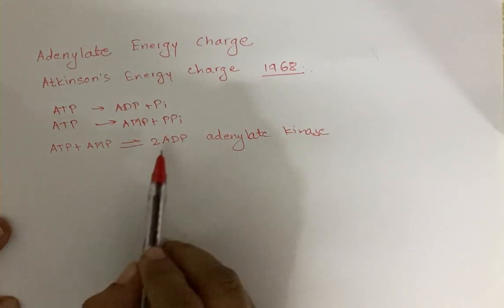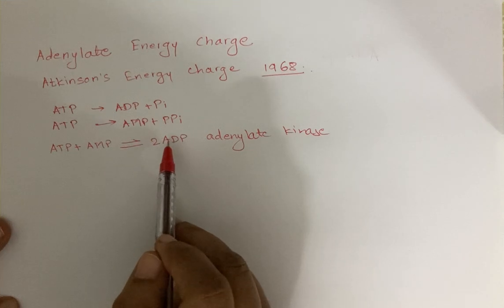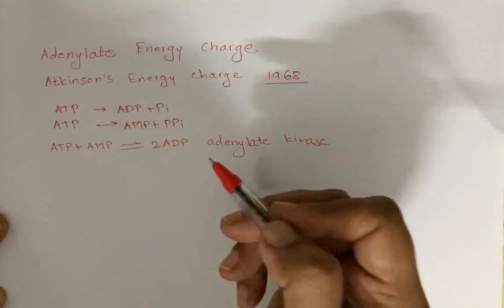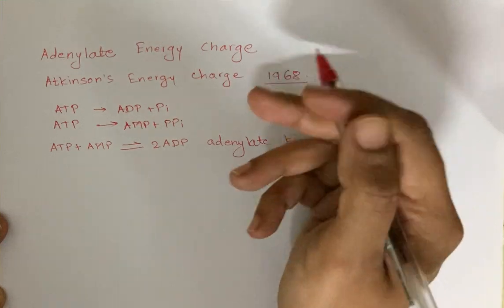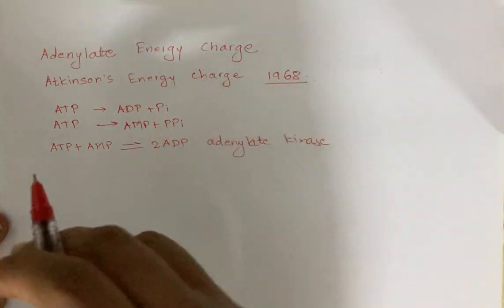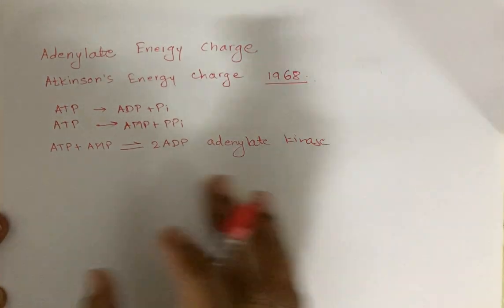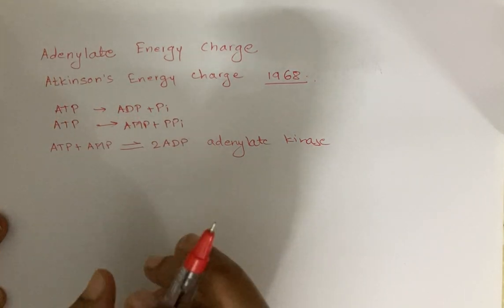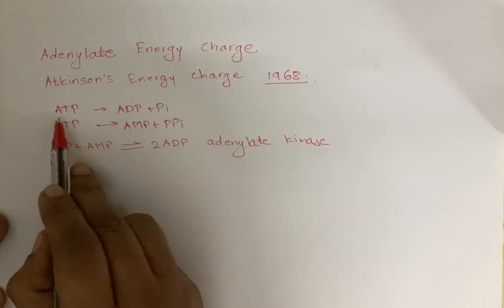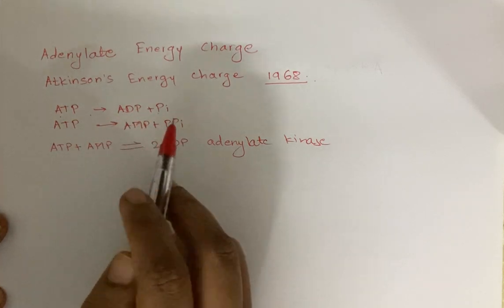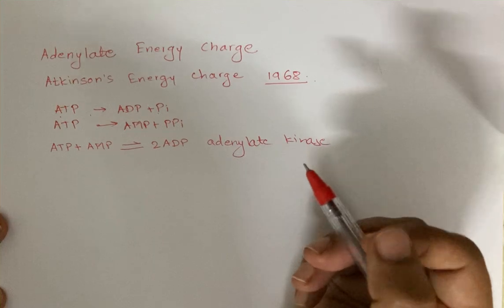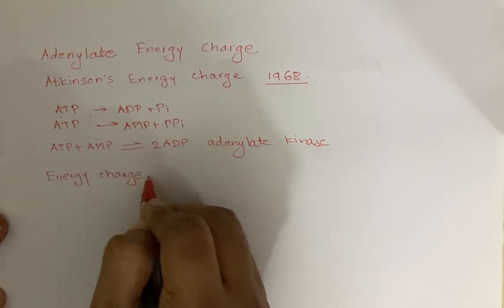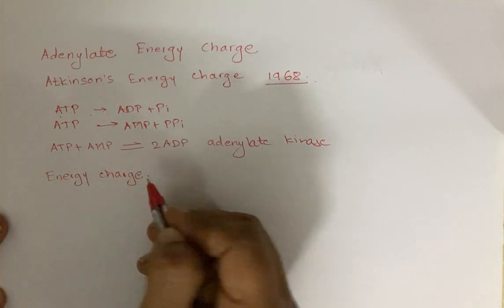All these reactions are related to energy generation or energy utilization. So how will a cell decide when energy-generating enzymes should be utilized, or when energy-utilizing enzymes should be used? These enzymes do not react to the concentration of ATP, ADP, or AMP individually — they react to one ratio, called the energy charge.